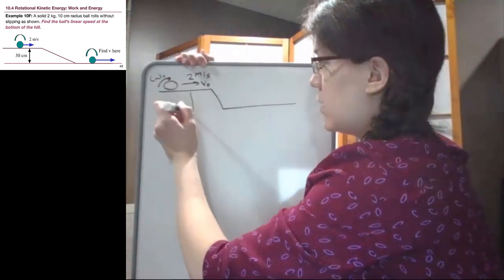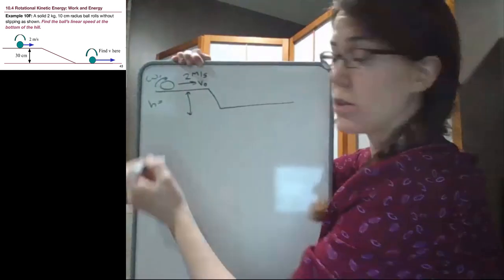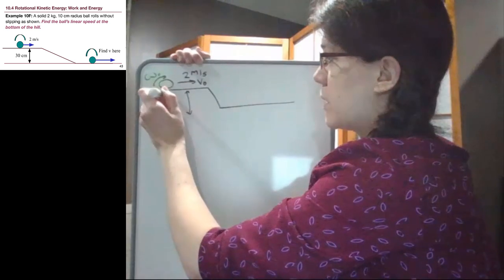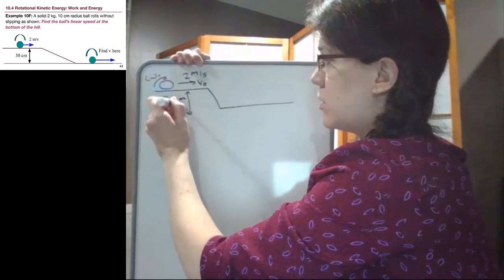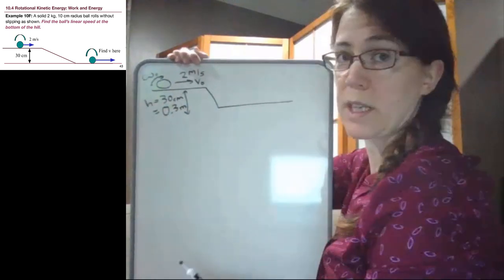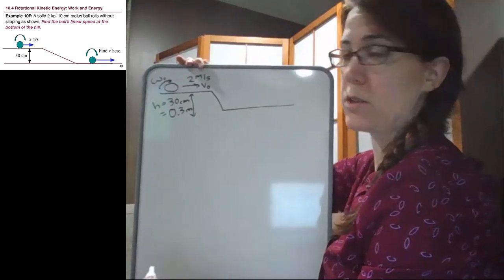There is a hill here whose height is 30 centimeters, which is going to be 0.3 meters. You can confirm that for yourself by setting up the unit conversion, dividing by 100 centimeters per meter.